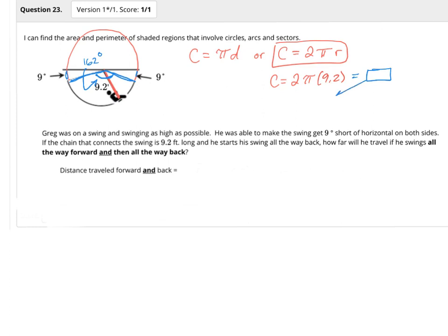So then, I need to take my answer that I just got here times 162 degrees out of the total 360 full circle that I have. And if I take this times my answer that I just got from the total circumference, then I'll know how far the swing is traveling when it goes one direction.